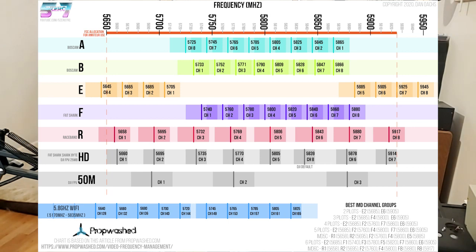DJI's channels on 25 megabit per second mode line up with the race band channels, though they've mixed up the order of some at the end. I'll link below to 507RC's copy of an edited version of Propwash's frequency table list that he's added DJI onto. Basically, DJI matches up to the race band frequencies, but it's actually a little bit smaller than the race band frequencies.